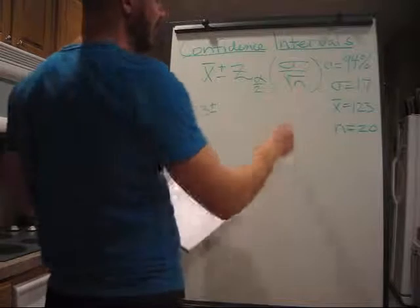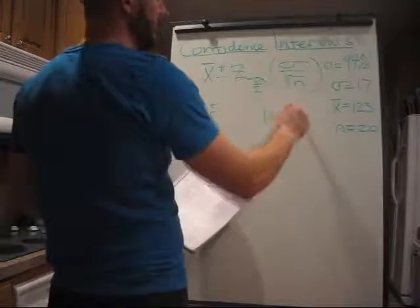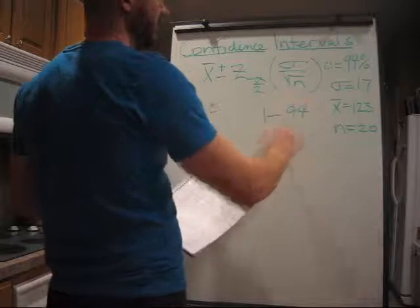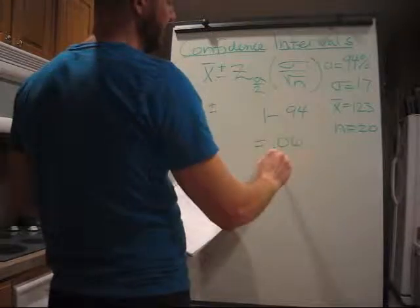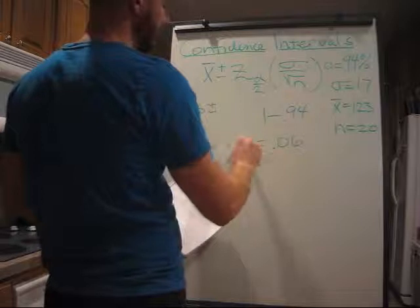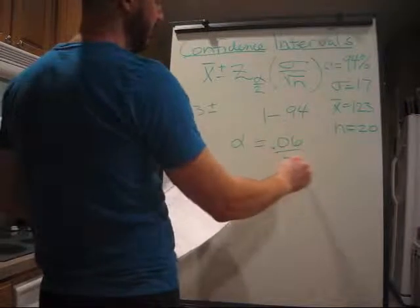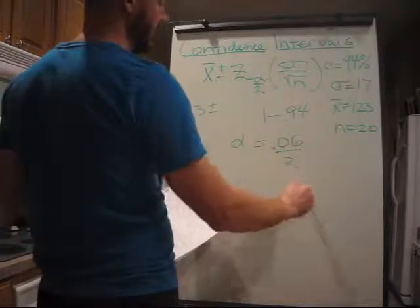minus 0.94 equals 0.06. That's our alpha over 2, 0.03.